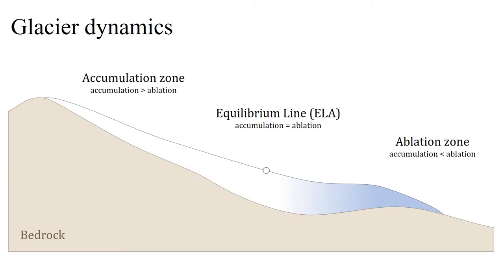The areas where more snowfall is accumulated than melted every year define the glacier accumulation zone. The snow is compacted into glacier ice and begins to flow downhill due to ice deformation and basal slide. This slow-moving flow is constrained by terrain morphology, and will reach elevations below the equilibrium line before being completely ablated.